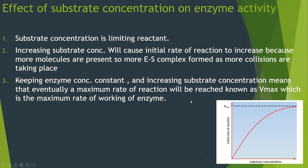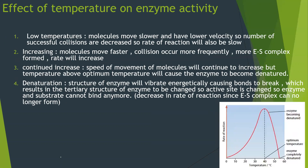The effect of temperature on enzyme activity follows a characteristic bell-shaped graph. At low temperatures, molecules have low kinetic energy and move slowly, so there are fewer successful collisions and fewer enzyme-substrate complexes form, giving a slow rate of reaction. As temperature increases, molecules move faster, more collisions occur, more enzyme-substrate complexes form, and the rate increases — up to the optimum temperature, where the rate of reaction is maximum.